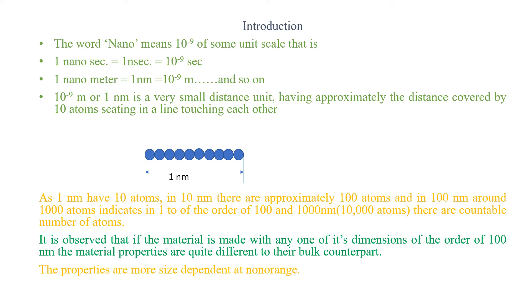The properties of nanomaterials are more size-dependent, meaning if I change the size from 10 nm to 9 nm, the properties change even if the element remains the same. For example, silicon is a semiconductor in bulk form, but at 10 nm it may show semiconducting properties, while at 9 nm it may show insulating properties. So just by changing the dimension by one nanometer, properties change drastically.